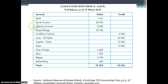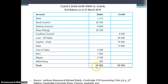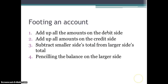This is what a trial balance looks like — a list of all the ledger accounts such as bank, stock control, debtors control, etc., and whether each account has a debit or credit balance. In this example, our bank — an asset — has a debit balance of $2,650. Our total debits for all ledger accounts is $78,950, and our total credits is the same: $78,950.